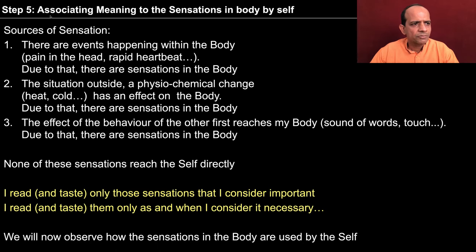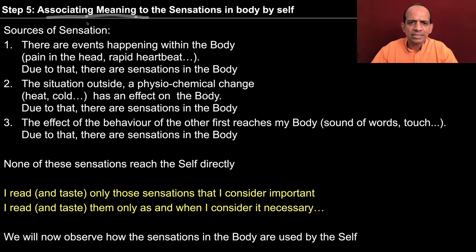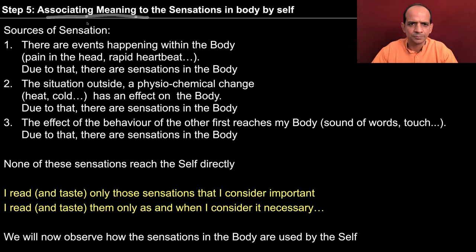In step 5, we will try to see how we associate meaning to the sensations in the body. As you could see in the previous session, sensations are taking place in the body and the feeling is there in the self. We are associating a feeling to some sensation, and thus there is some meaning being associated to the sensation.